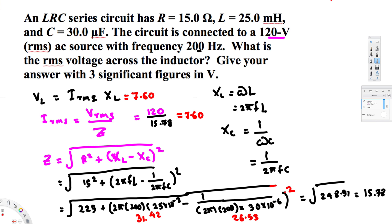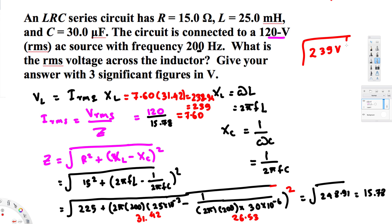Also, don't forget to square that term in the impedance formula. The inductive reactance is 31.42 ohms, and the capacitive reactance is 26.53 ohms. For VL, we multiply Irms by the inductive reactance: 7.60 times 31.42 gives 238.94, which in three significant figures is 239 volts. That's our final answer — 239 volts. I hope this helps, thanks for watching.